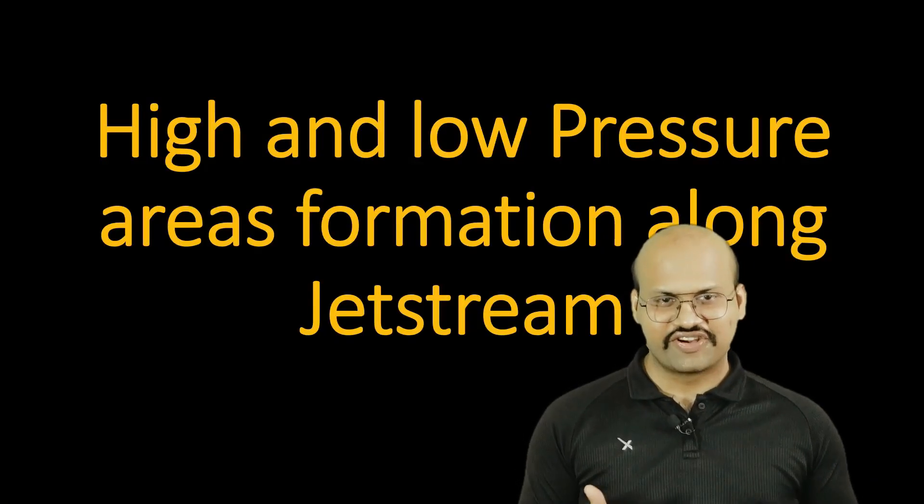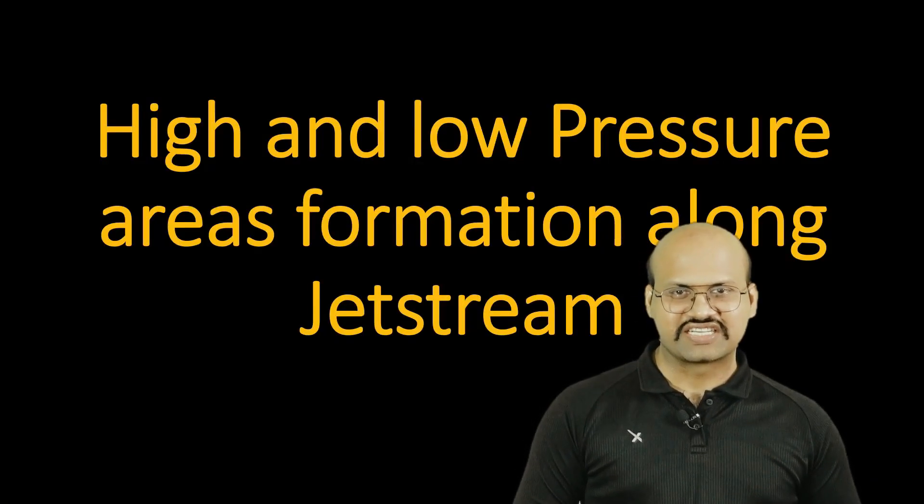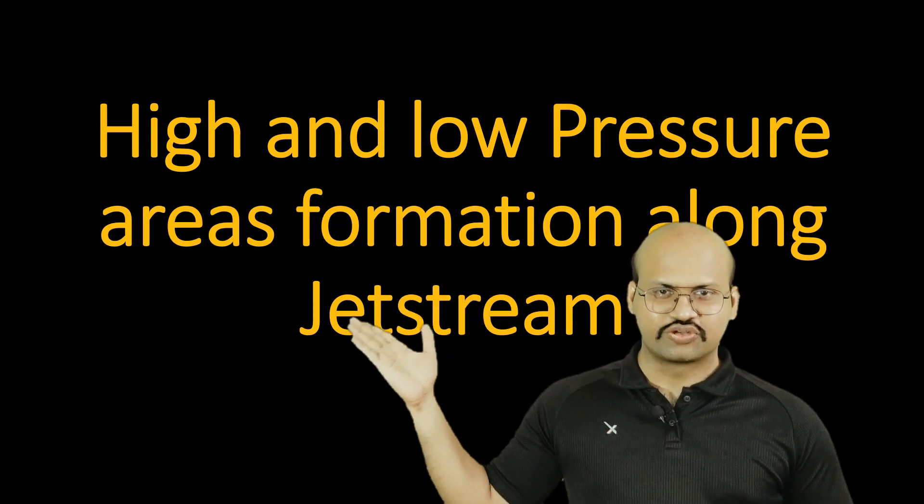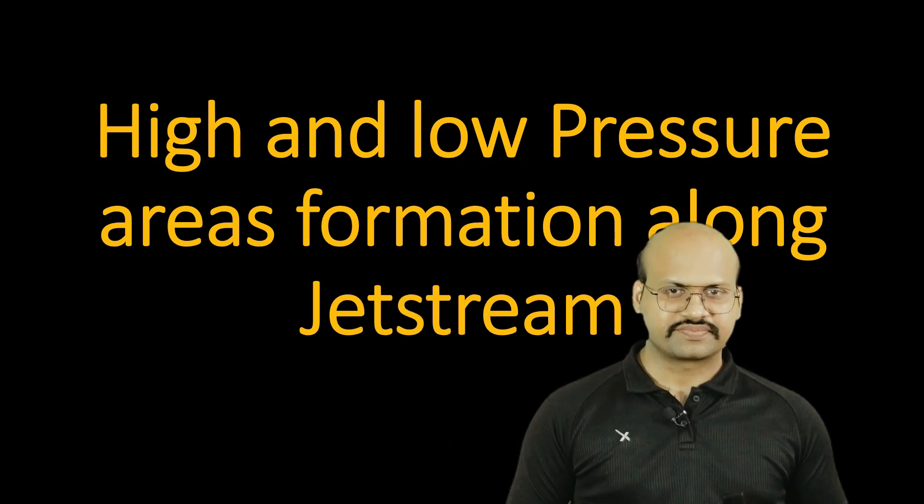Hello friends, welcome to another video of Zeta Axis. Today we will discuss the pressure areas which are associated with jet streams. Whenever we see a report on jet streams, we find that a high pressure area is associated with the lower or equatorward extension of jet streams, while a low pressure area is associated with the upward or northward extension. We will try to understand the mechanism which causes high pressure here and low pressure there.